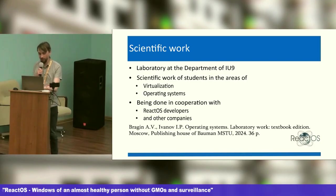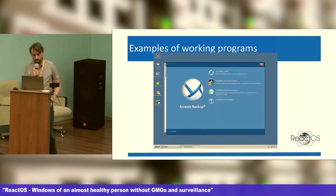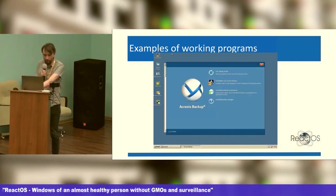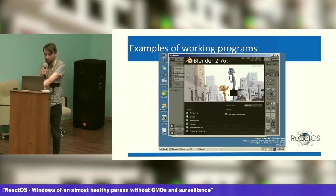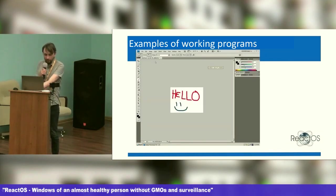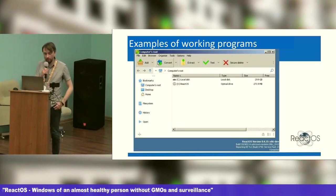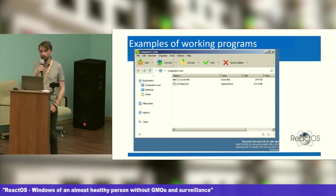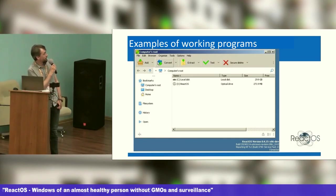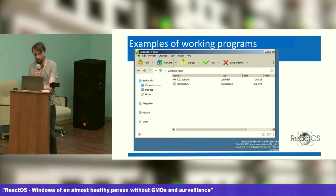Here are examples of working programs in the ReactOS operating system — naturally, not an exhaustive list. For example, Blender 2.76 — the latest version for Windows XP — can be run on ReactOS. Here is Photoshop, the well-known seventh version, as well as ABI Word, OpenOffice, and the archiving program 7-Zip. 7-Zip was chosen because its interface was written in a complex way and was the last to be corrected so that it displayed correctly in ReactOS — it had a lot of special effects for displaying elements and controls, and it was a tough nut to crack. Adobe Reader also turned out to be not the simplest program to ensure its launch.